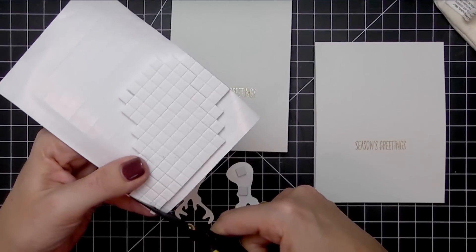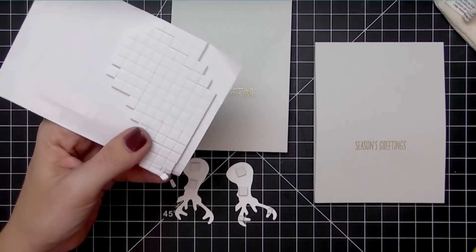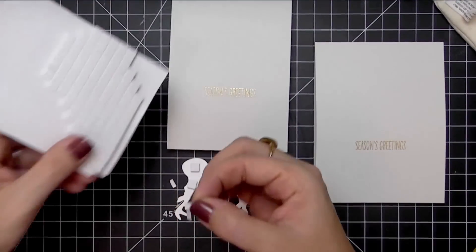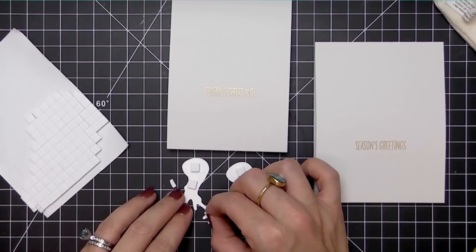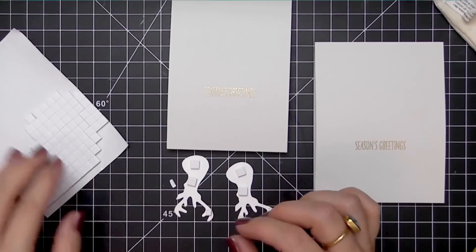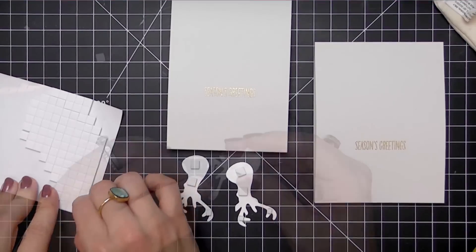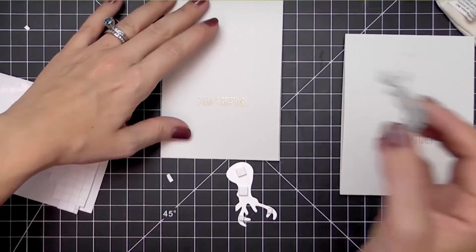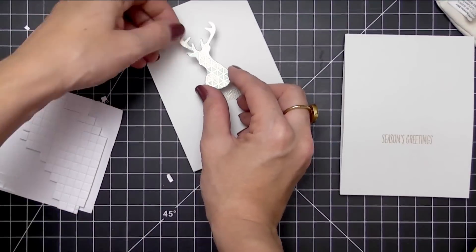I wanted to keep the rest of the card very clean and elegant so that those stag heads would really shine. I've cut a card base down to 3.5x5 inches from our dove gray cardstock and I've heat embossed a sentiment from our Heartfelt Holidays stamp set in that same gold embossing powder.